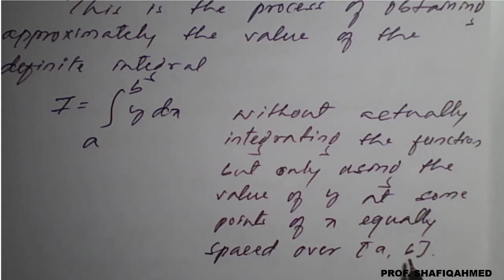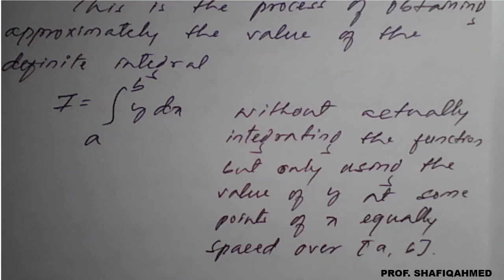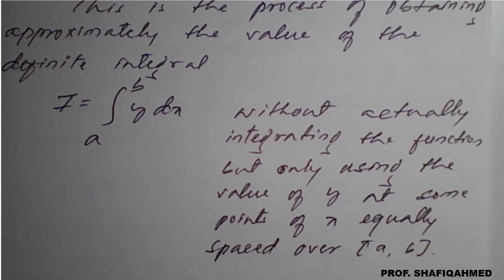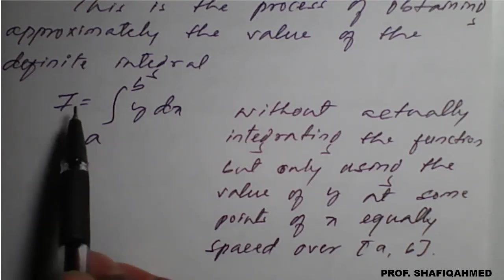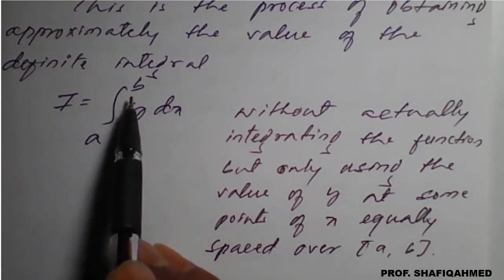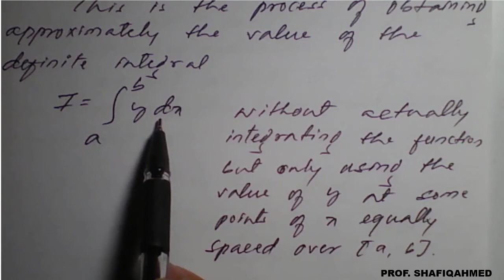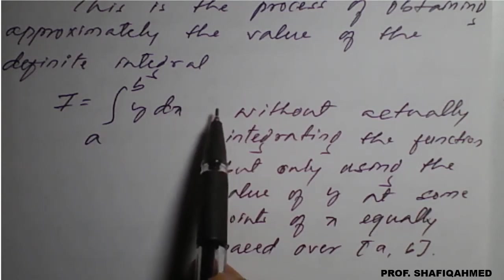We will use the values of a and b and simplify this numerical integration. We have a few rules or methods to simplify this numerical integration. Basically, I equals the integral from a to b of y dx is nothing but a numerical result.